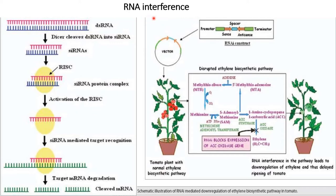Here, the double-stranded RNA of interest is taken. Dicer will cleave this double-stranded RNA into siRNA. Now this siRNA will be attached with the RNA-induced silencing complex, which is also called RISC. Here, the sense strand of the siRNA will be removed.